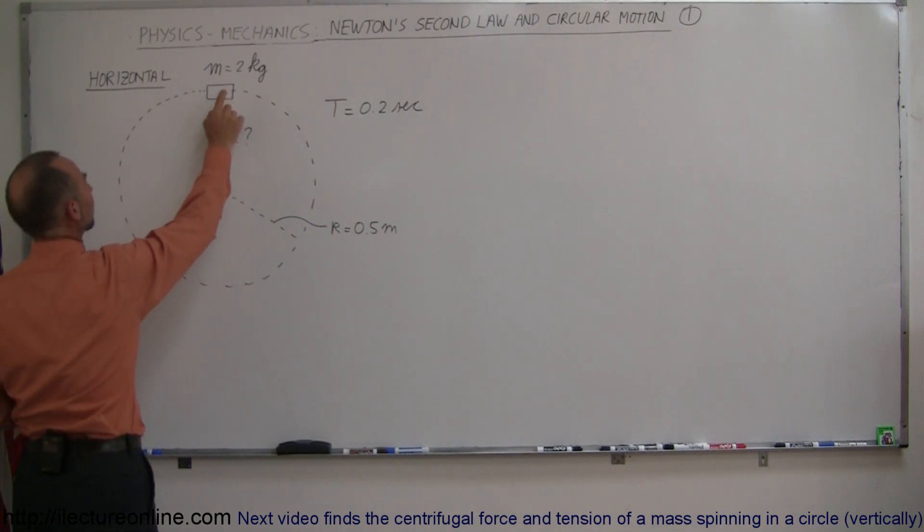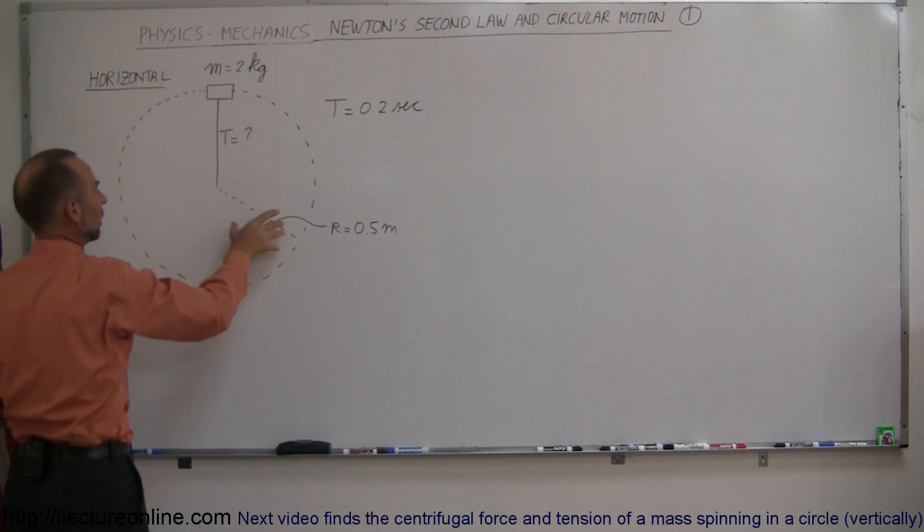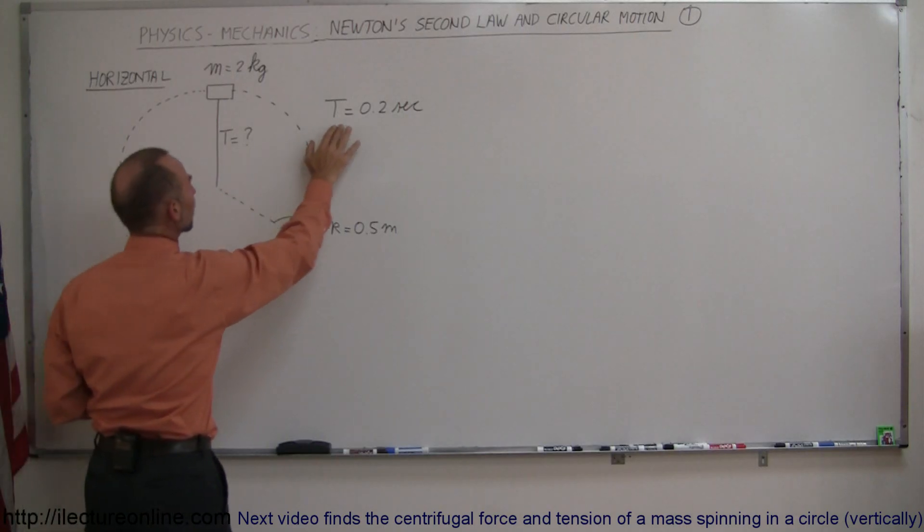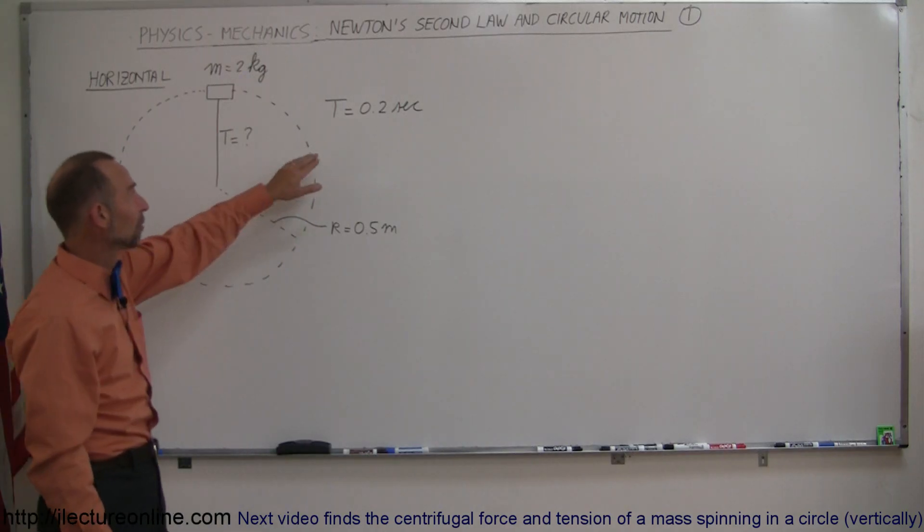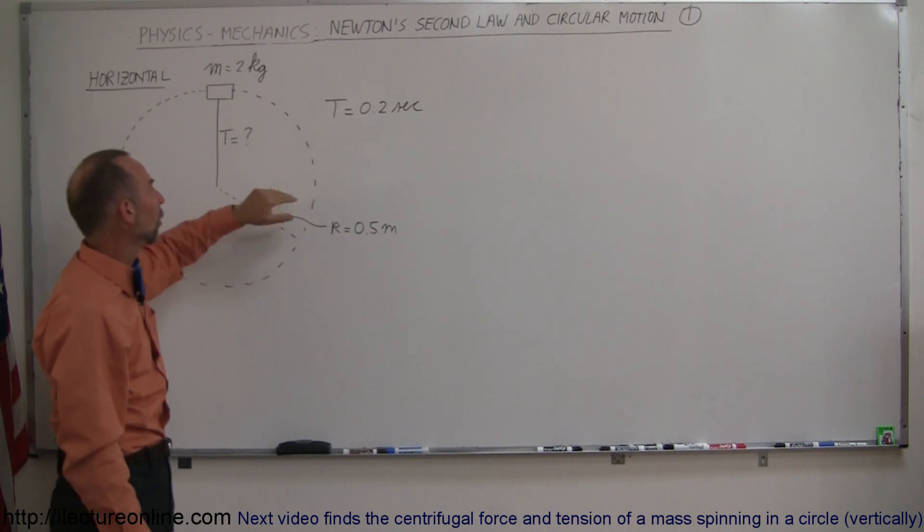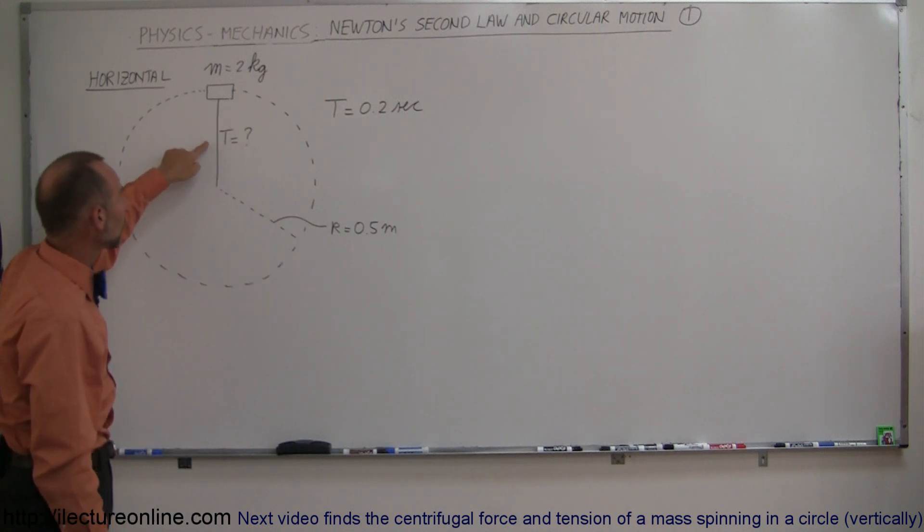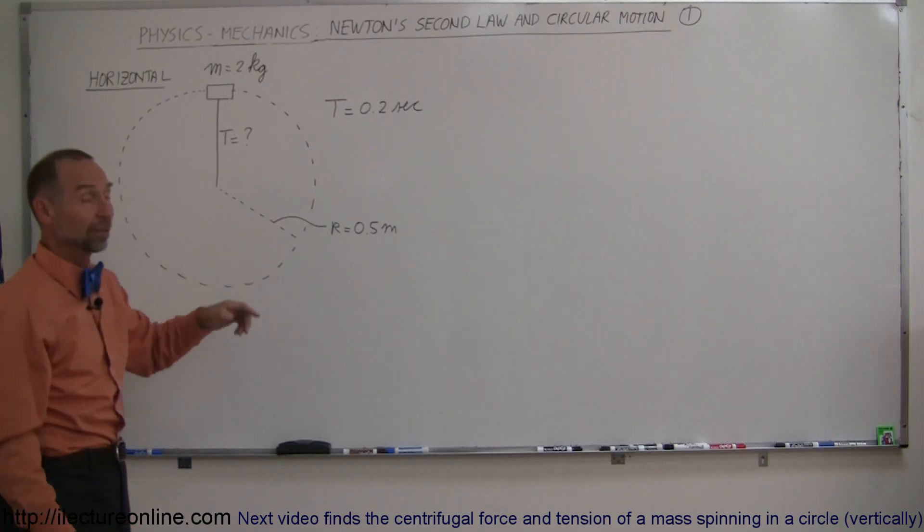A mass of 2 kilograms attached to a string, attached to the center of its circular motion, radius of 0.5 meters, and what is the tension in the string if the period, and of course I have a T here and a T there, they do that a lot in physics, they use the same letters for different things. This means the period of one revolution is 0.2 seconds, what is the tension in the string in order to keep that in orbit?